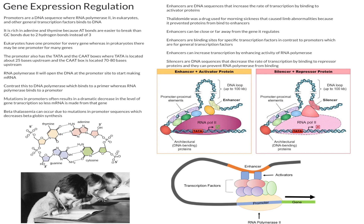Let's first talk about promoters. Promoters are a DNA sequence that can be about a hundred to a thousand base pairs long, where this is the area that RNA polymerase 2 in eukaryotes, as well as other general transcription factors, can bind to DNA. It's important to note that promoter binding is very different in bacteria compared to eukaryotes. In bacteria you just need the RNA polymerase as well as a sigma factor for promoter recognition and binding. On the other hand, this process in eukaryotes is much more complex and requires a bunch of transcription factors in order for RNA polymerase 2 to bind to the promoter.